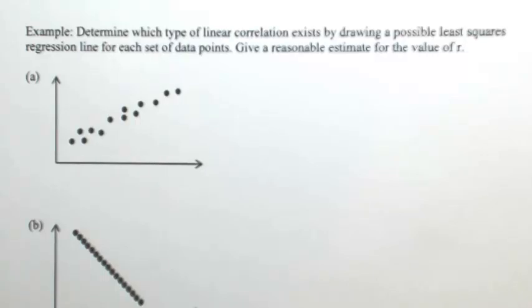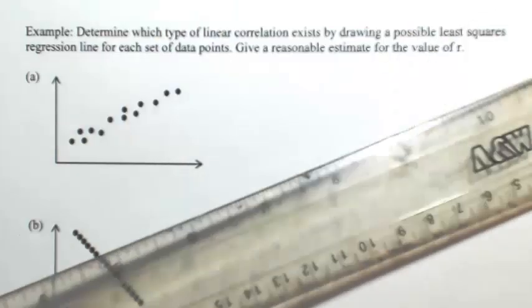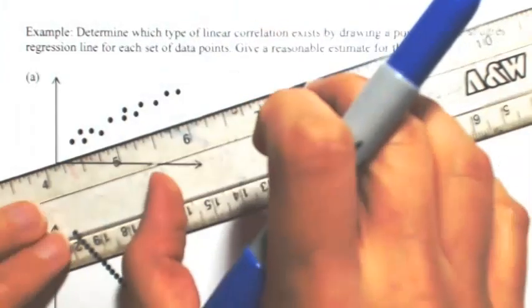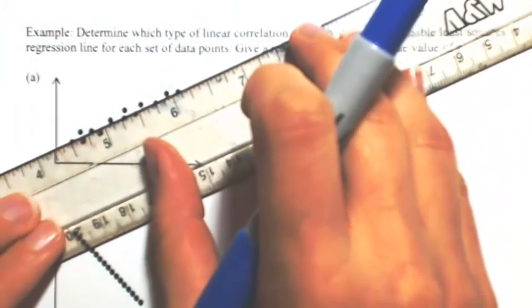So looking at this first picture, what we want to do is draw a line that's as close to as many points as possible. So I'm going to just eyeball it. Try to hit as many as I can and get as close to as many as I can.